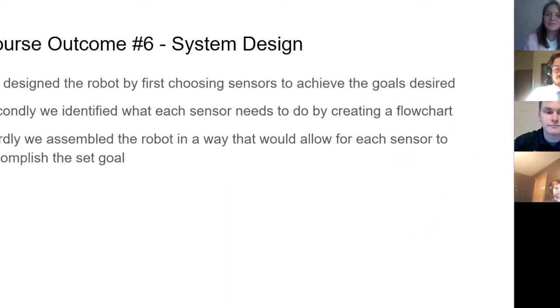For the system design, we designed the robot first by choosing the sensors to achieve the goal desired. Then we proceeded to identify what each sensor needed to be able to do via the flow chart, and after completing those two tasks, we were able to assemble a robot in a way that would allow each sensor to function properly in order to accomplish the set goal.